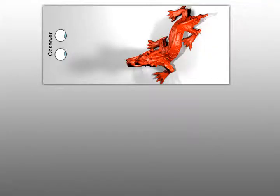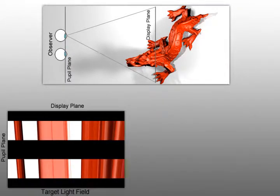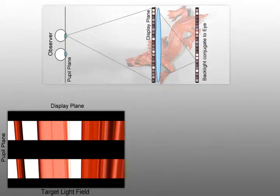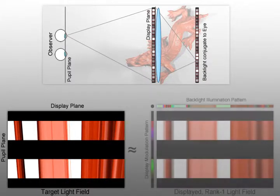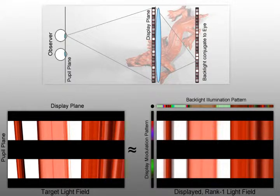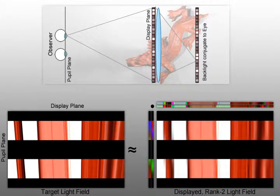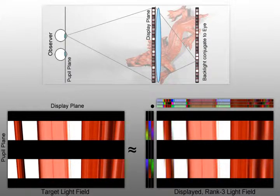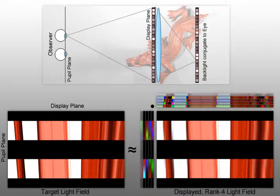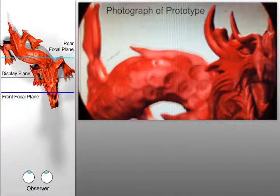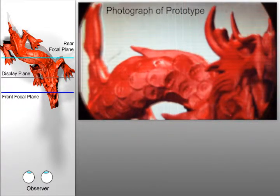For compressive image synthesis, we render a light field showing a 3D scene from multiple perspectives over the two pupils of a human observer. The prototype has an LCD in front of a lens with a backlight conjugate to the pupil plane of the observer. Through non-negative matrix and tensor factorization, we decompose the target light field into a set of modulation patterns. The patterns are shown on the display at a high refresh rate and are perceptually averaged by the observer, effectively synthesizing a low-rank approximation of the target light field.